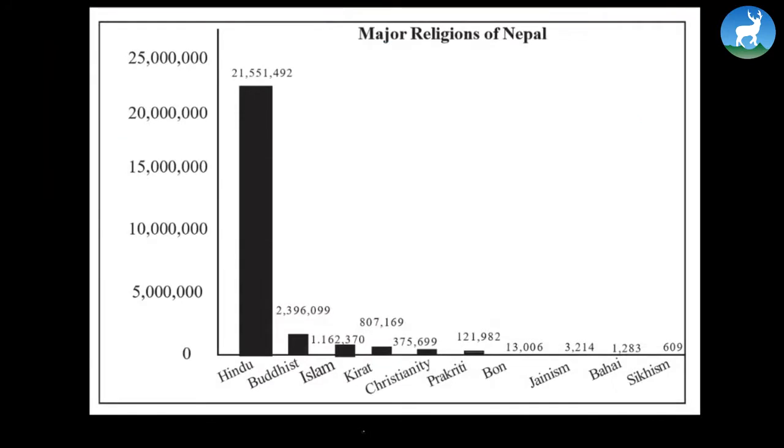Here we have a bar graph and the title of this is major religions of Nepal. It is called a bar graph, or clustered columns, or a histogram. The total number of people, or the population, is plotted on this side. This is what we call population on y-axis. And on x-axis, what is plotted? Different religions. So it is a graph between different religions and population. This is the point of reference. This graph simply means that 21,551,492 people are Hindu, while 2,396,099 people are Buddhist, followed by 1,162,370 Islam people.